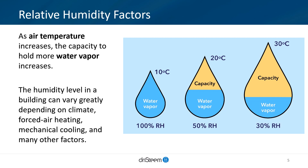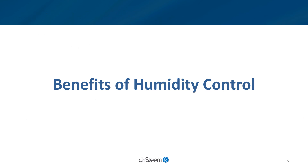Relative humidity in a building is also affected by climate, forced air heating, mechanical cooling, entering outside air, and many other factors. Maintaining optimal RH can be challenging. However, relative humidity is an essential aspect of indoor air quality.